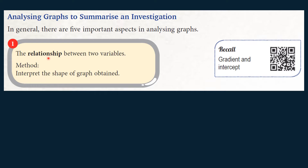First, to investigate the relationship between two variables — this is the major use of a graph. By interpreting the shape of the graph, we can tell the relationship between the quantity on the vertical axis and the horizontal axis. For example, if the graph is a straight line, the rate of change between the two quantities is constant. If it's a straight line passing through the origin, then the two quantities are directly proportional.